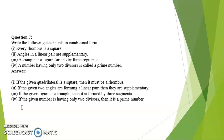Second: angles in a linear pair are supplementary. Answer: if the given two angles are forming a linear pair then they are supplementary. Third: a triangle is a figure formed by three segments. Conditional statement: if the given figure is a triangle then it is formed by three segments.